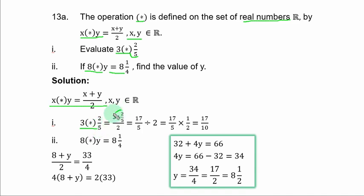And you replace them in the operation. If you simplify the numerator, you have 17 over 5 divided by 2. You can write 2 over 1 so that in fraction division, the division sign always changes to multiplication.